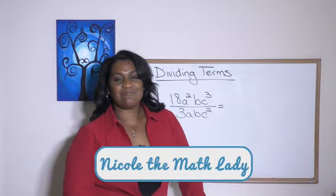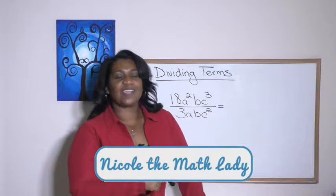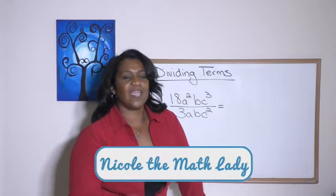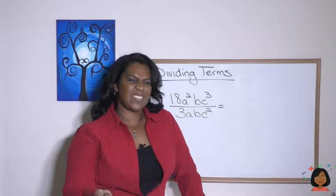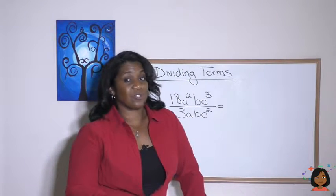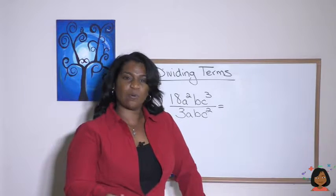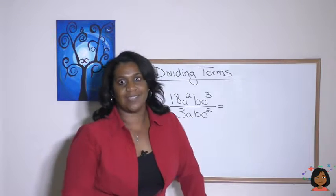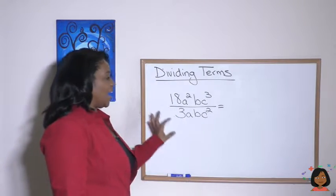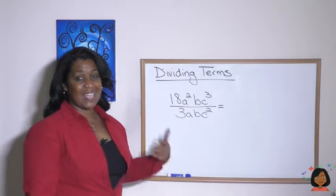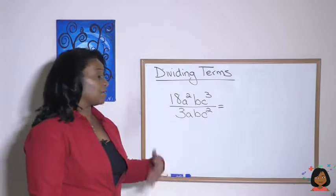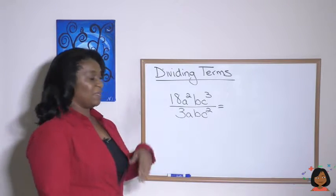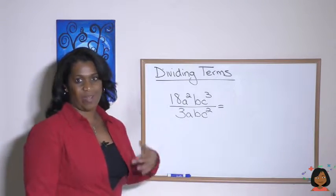Hi, it's Nicole the Math Lady. Today, we're talking about dividing terms. And really, what does that mean? Well, we're talking about terms that have exponents, and how do you deal with them? Take a look at this example. We've got 18 a squared b c to the third over 3 a b c squared.